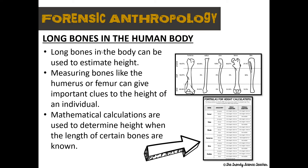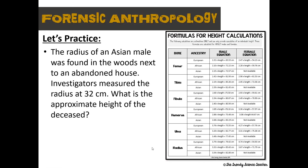Measuring these long bones can give clues as to the height of a person. The most accurate way to measure height is by using a person's femur — the bone that runs from your hip to your knee. To get the most accurate estimation of height, it's also important to have other information such as ancestral background and the sex of the person. I've provided a height calculation chart with different long bones, ancestry information, and different equations for male versus female — all of that information is helpful when determining the height of an individual.